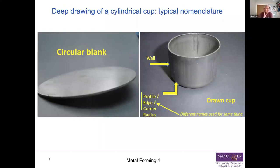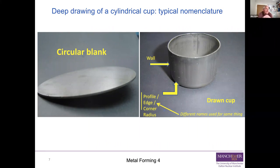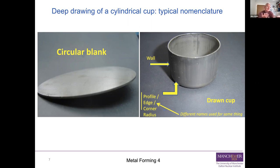We have nomenclature: on the drawn cup, the bit that's vertical we call the wall. The bit which curves between the wall and the flat bottom is called the profile radius, edge radius, or corner radius - you'll see different things in different textbooks. So you've got a vertical wall, a bit that curves around the corner, and a flat bottom to the cup, which is defined by the flat end of the punch.